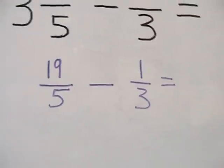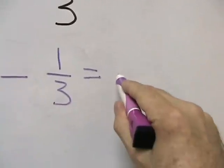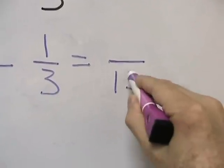Next what we're going to do is multiply the two denominators, 5 and 3, to get 15. This will be our new denominator.